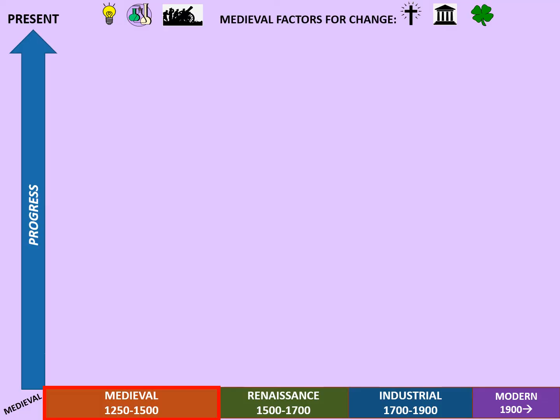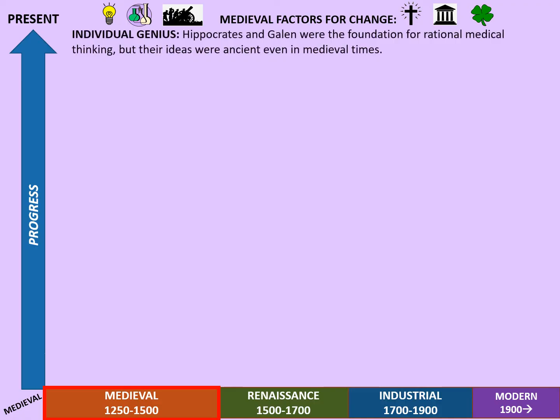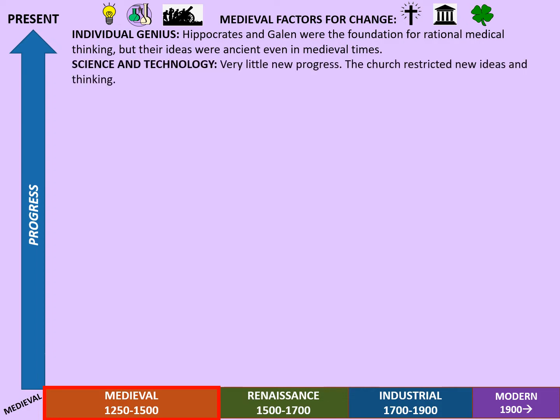So let's consider our factors again and where they are relevant to the medieval period. The role of individual genius during the medieval period is largely continuity — Hippocrates and Galen were the foundation of rational medical thinking, but remember their ideas were ancient even by medieval standards: Hippocrates being an ancient Greek and Galen being an ancient Roman. As for science and technology, there was very little new progress, as the church restricted new ideas and thinking quite deliberately.